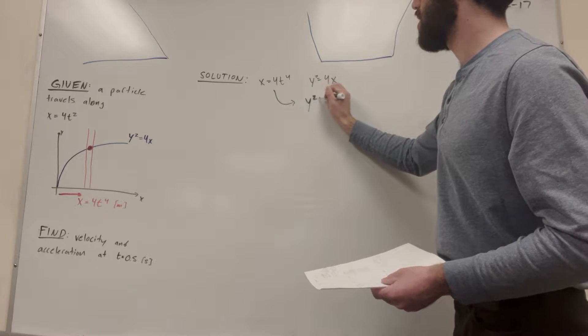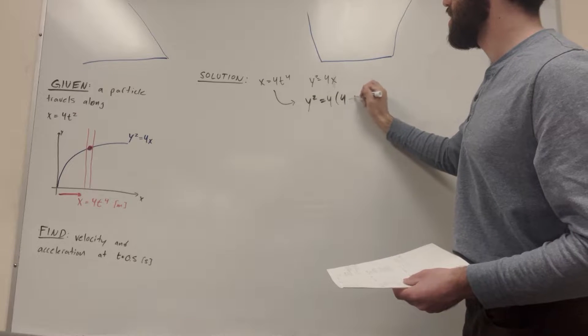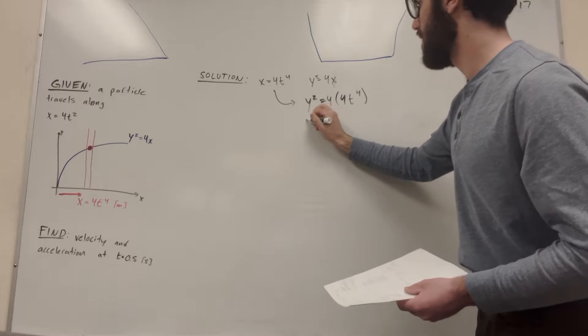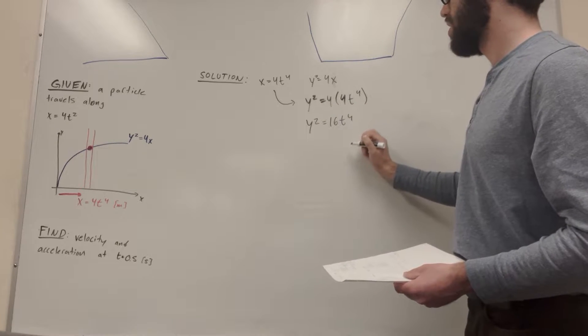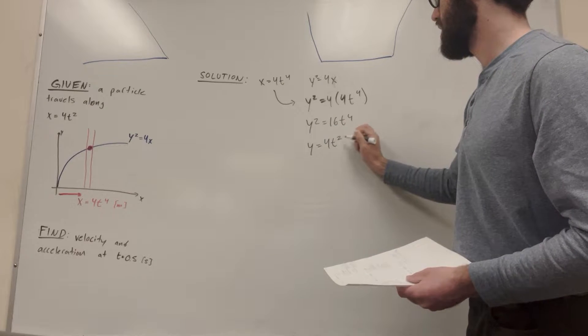So moving that down, we're going to get y squared equals 4 and then 4t to the 4th. So let's simplify this. y squared equals 16t to the 4th. And let's take the square root of both sides to get y equals 4t to the 2nd.